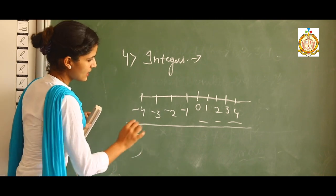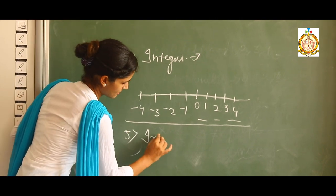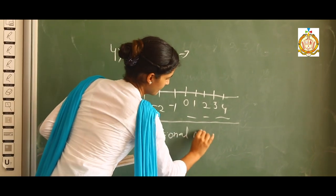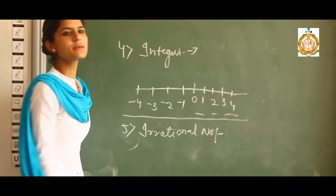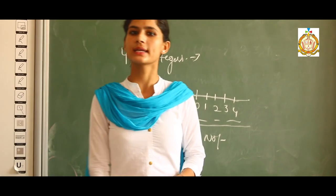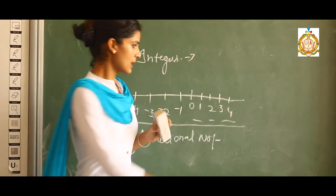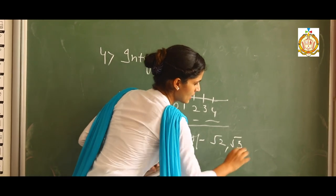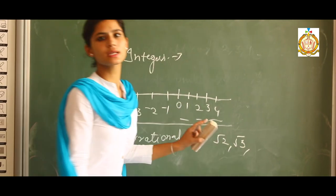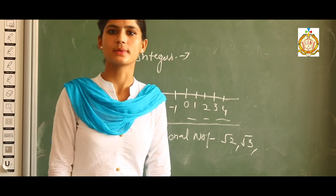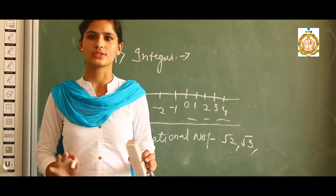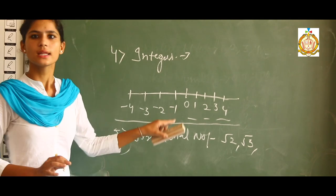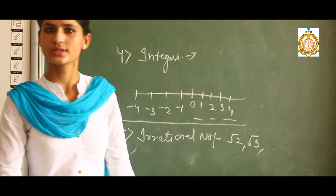The fifth part is irrational numbers. In simple form, the square root-containing numbers are called irrational numbers — like square root of two, square root of three. These numbers are called irrational numbers. In simple form, no need for a wider concept: square root terms are called irrational numbers.